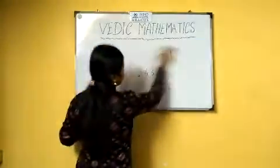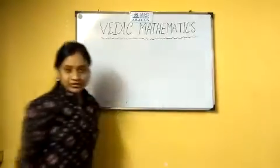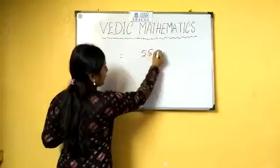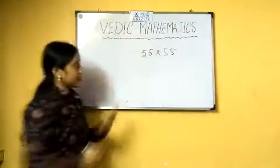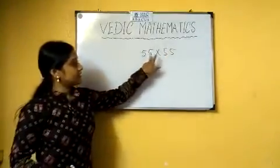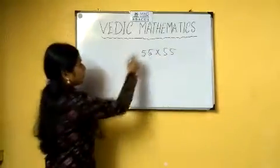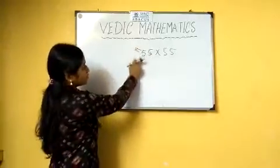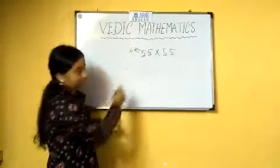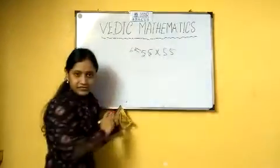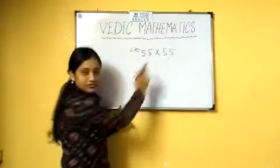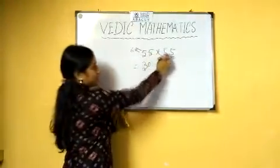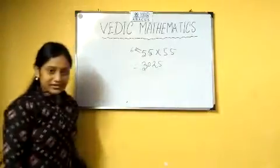Next we come to the square method. For the square of 55: since the last digit is 5, take one more than the tens digit — one more than 5 is 6 — then multiply 6 into 5, which gives 30. And 5 into 5 is 25. So our answer becomes 3025.